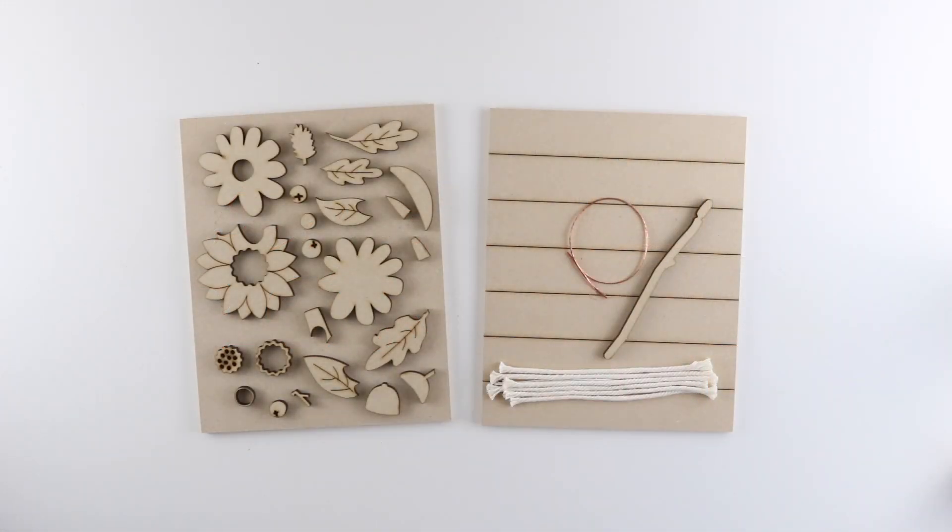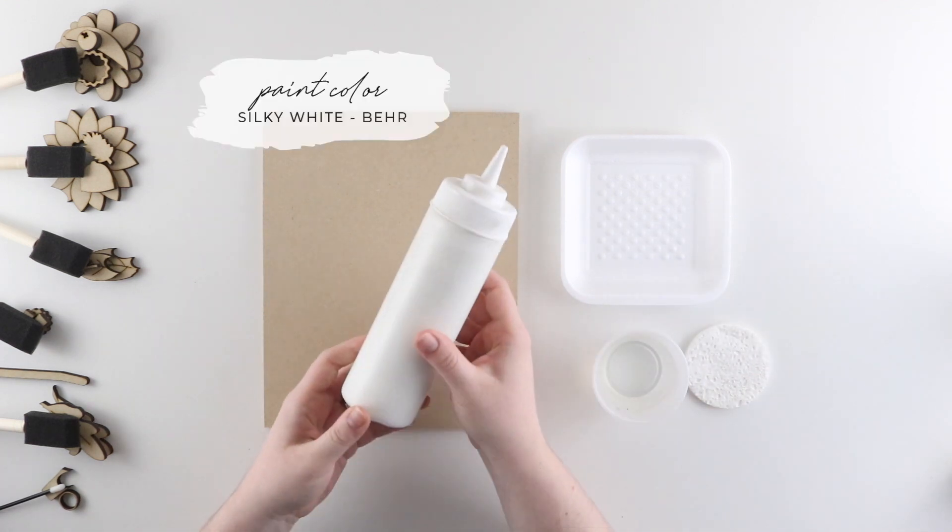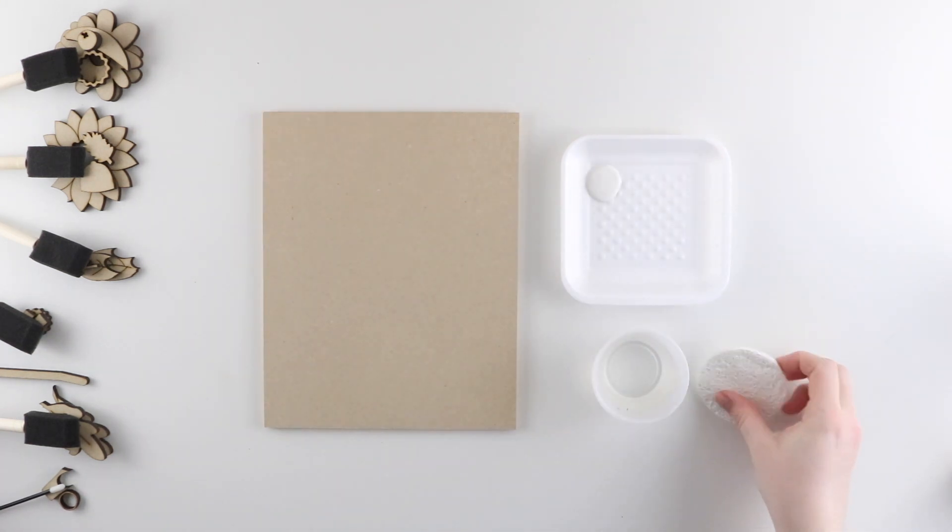I'm going to start off by painting everything, so I need to sort everything into groups based on the color. I'm painting them on the solid insert. I'm going to be doing the color wash method, so I need some water, a paint sponge, and I'm going to be using the color Silky White by Bear.